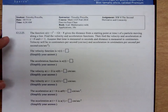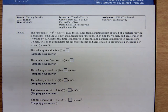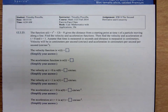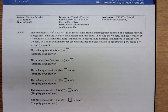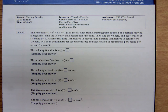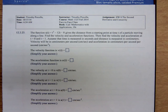And I have another one I want to do, an application using second derivatives. This involves velocity and acceleration. The function S(t) = t^3 - 12t - 8 gives the distance from a starting point at time t of a particle moving along a line. Find the velocity and acceleration functions. Then find the velocity and acceleration at t = 0 and t = 1. Assume time is in seconds and distance in centimeters. Therefore, velocity will be in centimeters per second, and acceleration in centimeters per second per second.